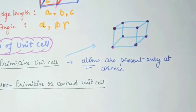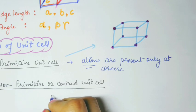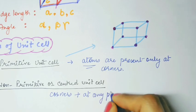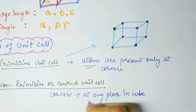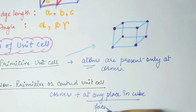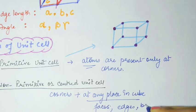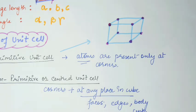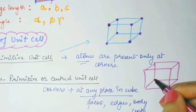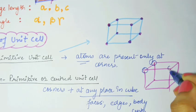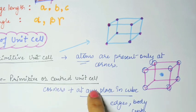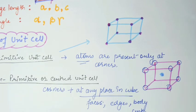In case of non-primitive, we have atoms at corners plus at any other place in the cube — that can be face center, on faces, edges, or body center. That is known as the non-primitive unit cell. Here atoms are at the corner and also at the body center. This is a non-primitive unit cell, also called a centered unit cell.